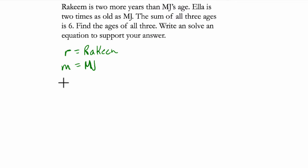Ella is two times as old as MJ, so we have E for Ella. And we can actually write some relationships here. I know that Rakim is two more years than MJ's age. So Rakim is R, and that just equals MJ's age, so that's M, plus two, two more than MJ's age.